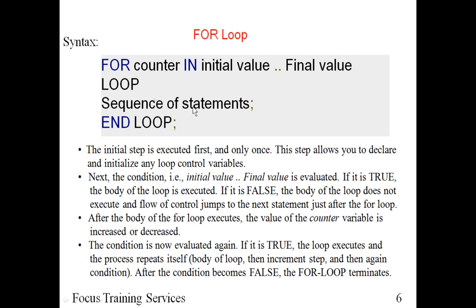So this is nothing but the flow. Now in the next step, after the body of the for loop executes, the value of the counter variable is increased or decreased. When the body of the loop is executed, it affects your counter — that is, the value of your variable — and it increases or decreases.